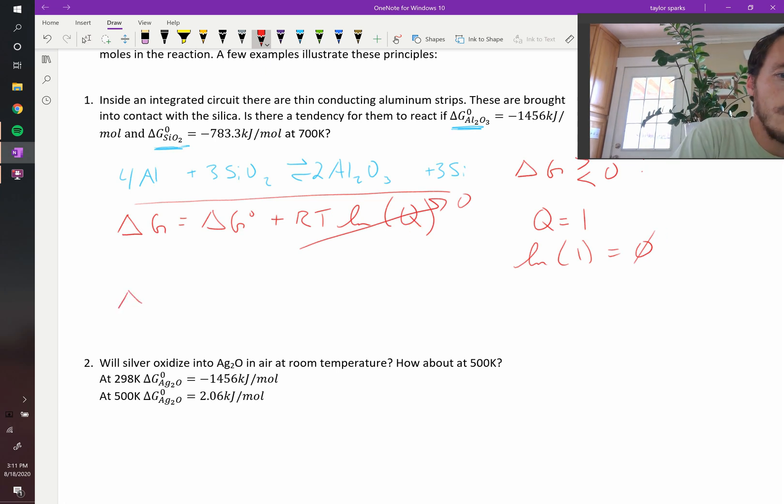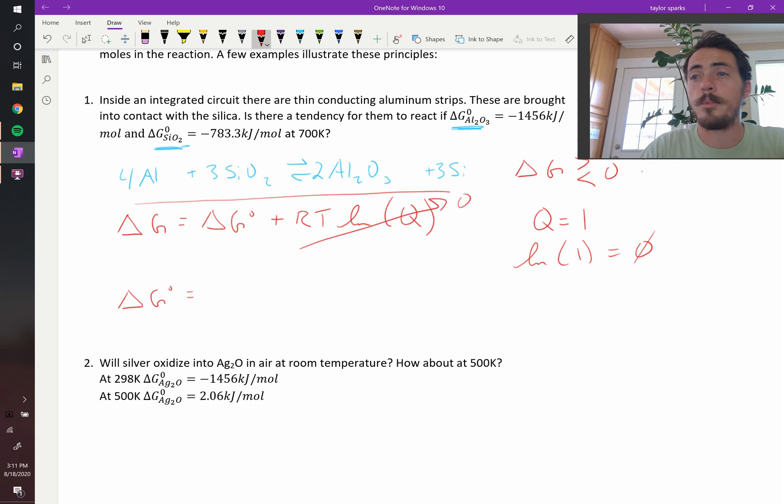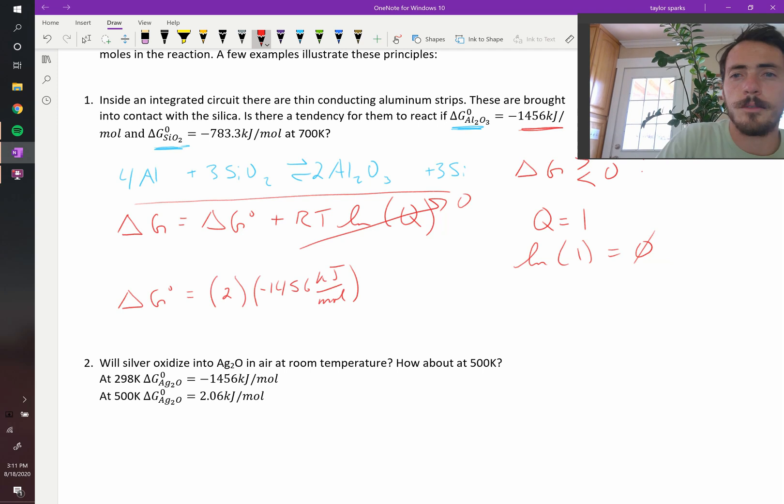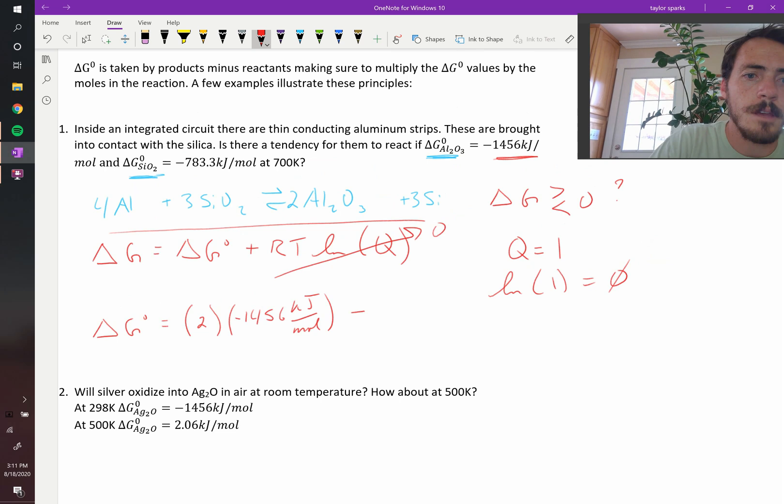Well, the change in free energy under standard conditions is equal to the products minus reactants of the energy of formation values. So we're going to sum up the products. That's going to be a value of two multiplied by the aluminum value, which is negative 1456 kilojoules per mole, plus three times silicon. But silicon is in its elemental state, so it's just zero. We can ignore it.